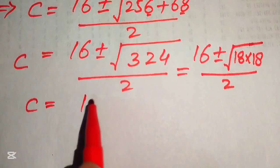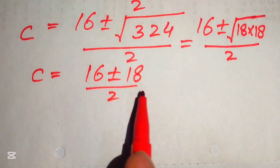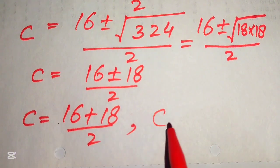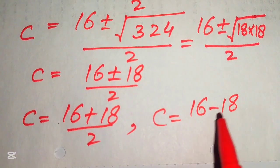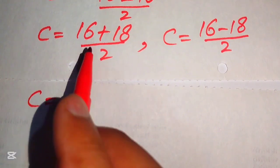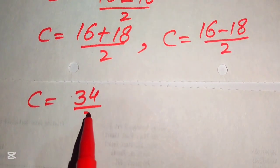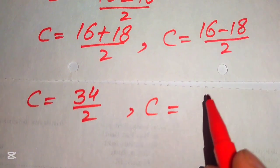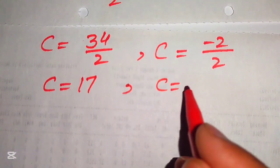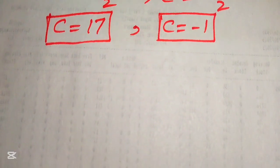We obtain 16 plus or minus 18, divided by 2. Splitting into two cases: the positive case gives (16 plus 18) divided by 2, which is 34 over 2, so C equals 17. The negative case gives (16 minus 18) divided by 2, which is minus 2 over 2, so C equals minus 1. These are the two roots from the first method.